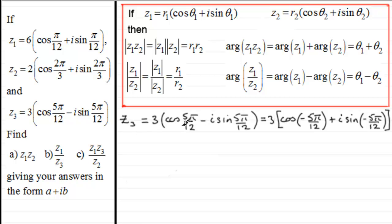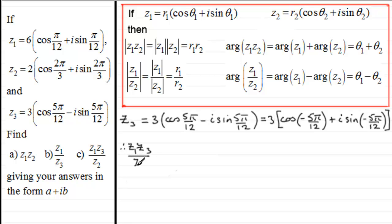For part c, z1·z3÷z2: as shown in part b, z3 in standard form has argument −5π/12, i.e. z3 = 3·(cos(−5π/12) + i·sin(−5π/12)). With that result we can now work out z1·z3÷z2 in mod-arg form.